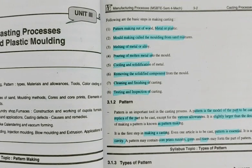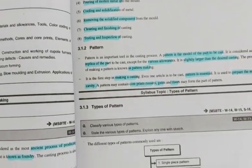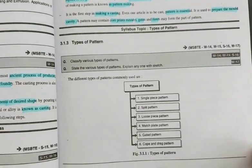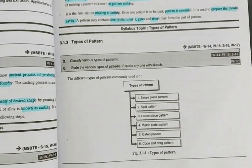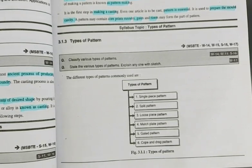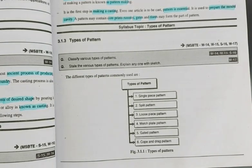Now, pattern basically is the replica of the casting to be produced. There are different types of patterns used for casting. Types of pattern: single piece pattern, split pattern, loose piece pattern, match plate pattern, gated pattern, and cope and drag pattern. We will see one by one.